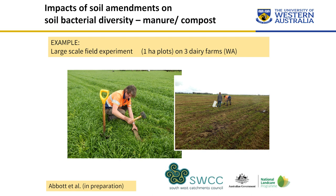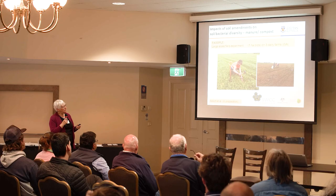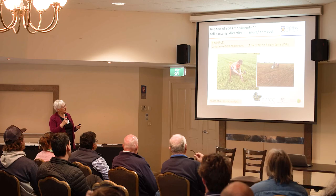We've done some work in dairy. This was a trial with the South West Catchments Council on south of Perth — single-hectare plots on three farms with different nutrients applied. We were applying manure, compost at two rates, and fertiliser alone. Fertiliser was applied with all of these amendments — not only fertiliser alone, but these soil amendments with the fertiliser — because at the time the farmers weren't game to leave the fertiliser off. So the amendments were additional, which wasn't quite how we would have designed the experiment, since we thought the amendments might be a substitute.